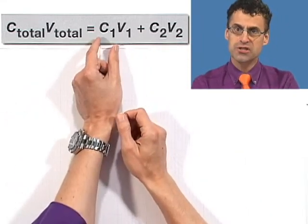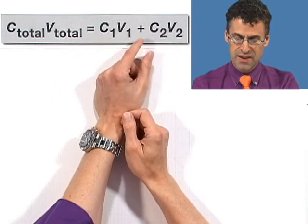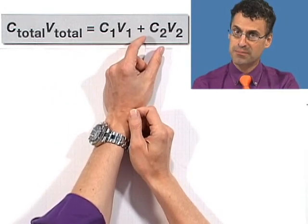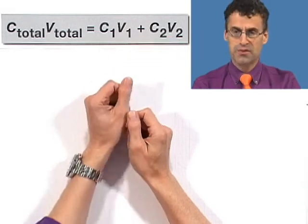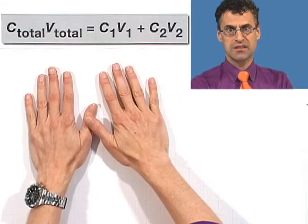Namely, taking the concentration of the first amount, multiplying by the volume of the first amount, and then adding the concentration of the second amount multiplied by the volume of the second amount. So these two things have to be equal, and that actually allows us to crack this thing open.